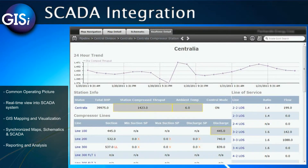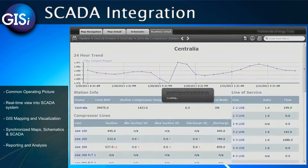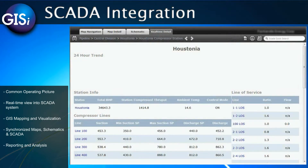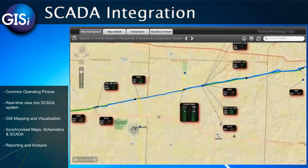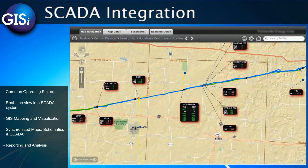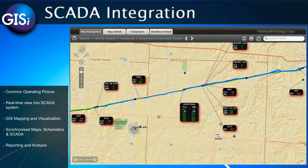Through the built-in navigation tools, users can walk through the pipe system to view the previous or next device within the system. Here we have walked south to the Houstonian compressor station and can begin to perform the same analysis on this device. We can jump to the map navigation tab and see that the map's position has been updated to reflect the location within this data system.